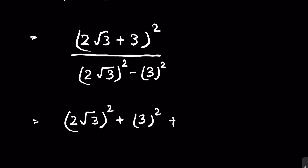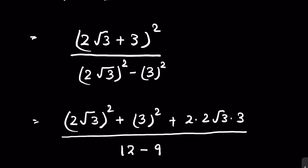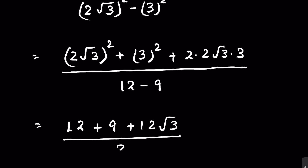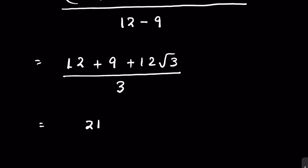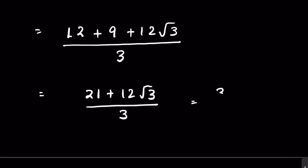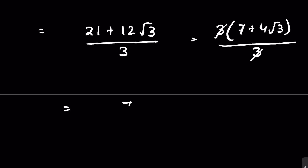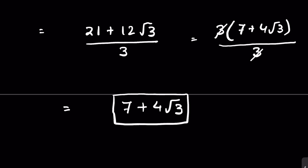The numerator is 12 + 9 + 12√3 = 21 + 12√3, over denominator 3. Taking 3 as common in the numerator: 3(7 + 4√3) / 3. The 3s cancel, giving the final answer: 7 + 4√3. Like and subscribe, thanks for watching.